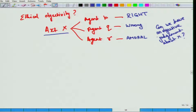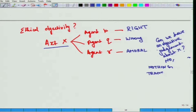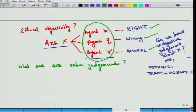The answer for most Emotivists would be: no, nothing trans-agent. Value judgements then become a consequence of the agent. If the agent has a positive reaction to it, the action is right. If they have a negative reaction, the action is wrong. And if the agent does not have a value reaction to it, we can call it Amoral. Then, what use are value judgements?